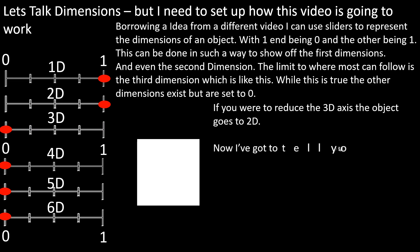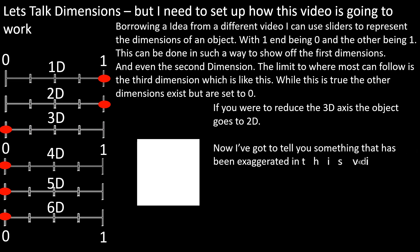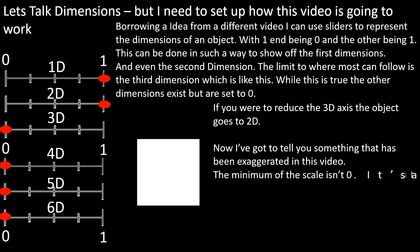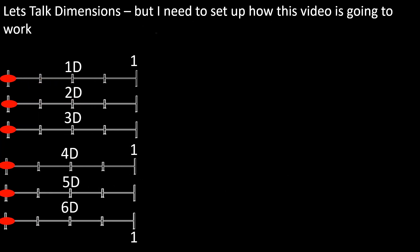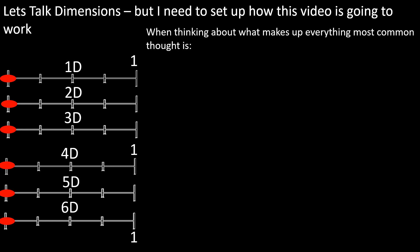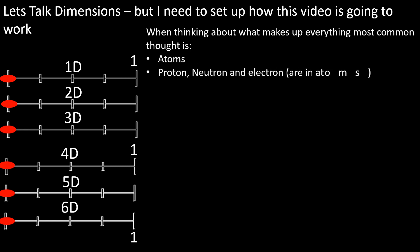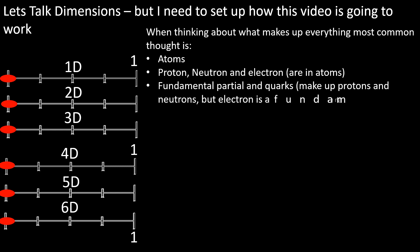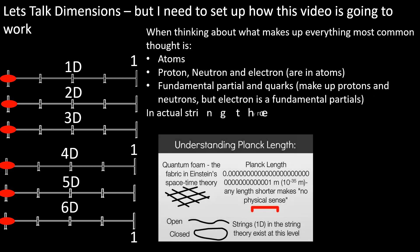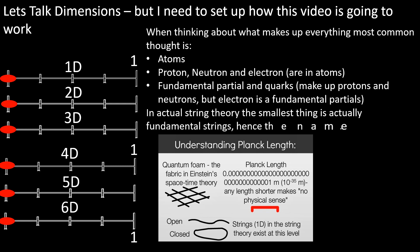Now I've got to tell you something that has been exaggerated in this video — the minimum scale isn't 0, it's a little bigger. When thinking about what makes up everything, the most common thought is atoms, protons, neutrons and electrons, fundamental particles and quarks. In actual string theory, the smallest thing is actually fundamental strings — hence the name.